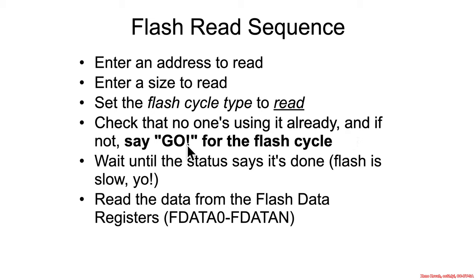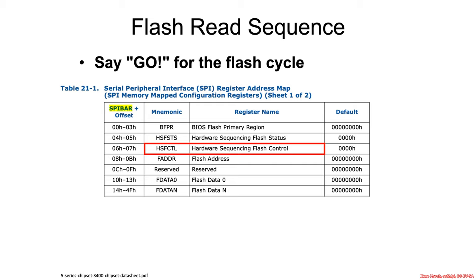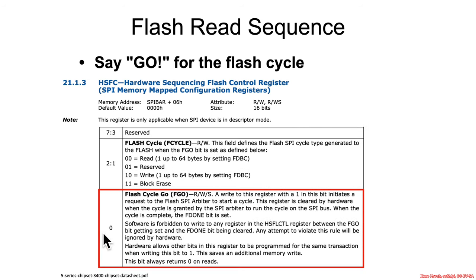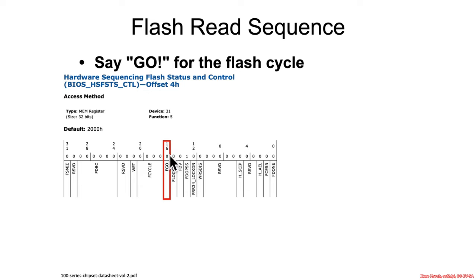Skipping over the check for whether anyone's using the flash for now, let's go straight to go — we'll come back to that when we hit that register. Normally you would check if anyone's using it before you say go, but let's assume you just say go. To say go — to execute a read transaction for a given number of bytes from a particular flash linear address — you use the hardware sequencing flash control register at offset 6. We've already seen it for flash data byte count and flash cycle type; at bit 0 is flash cycle go. Once everything is set up, you set flash cycle go to one, and it executes whatever cycle type was programmed, for however many bytes, at whatever address was in the flash address register. On the 100-series chipset, it's the same thing — hardware sequencing flash status and control — with an FGO bit at bit 16.